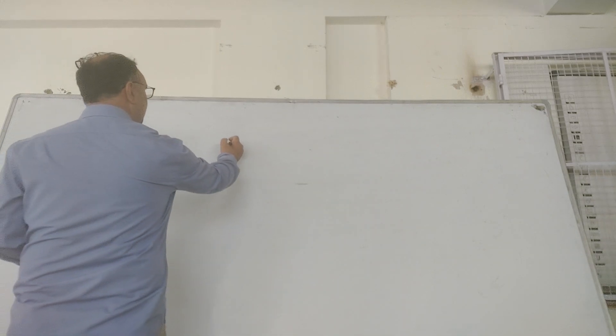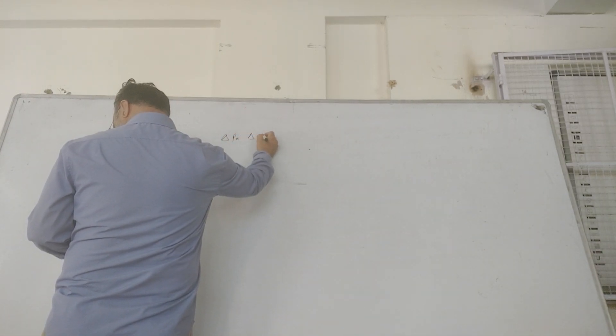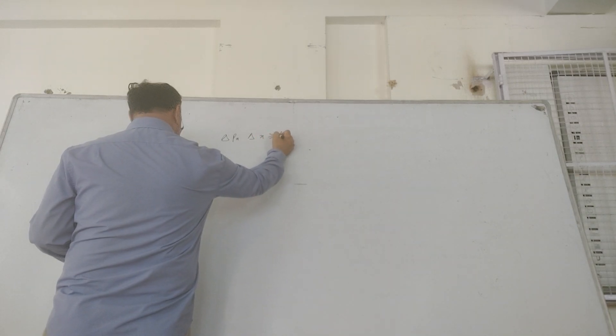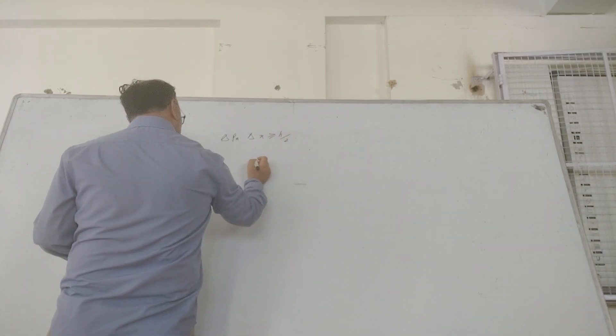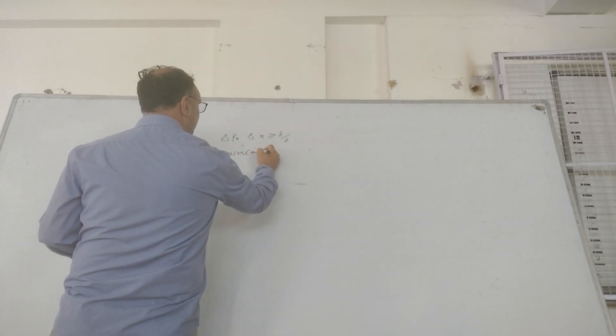The important thing is that when we said that delta Px into delta x is greater than h over, it is a sort of uncertainty in this field.